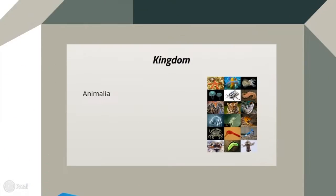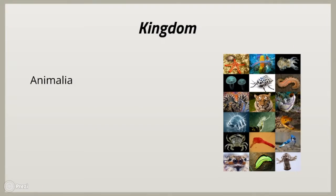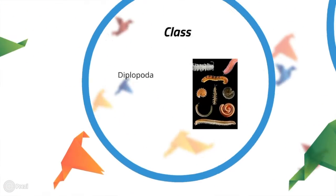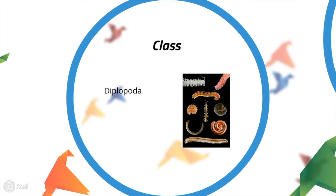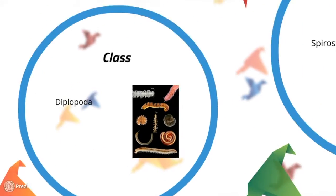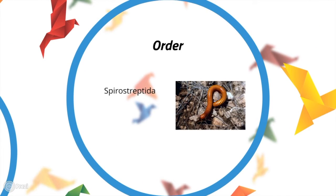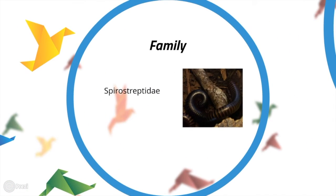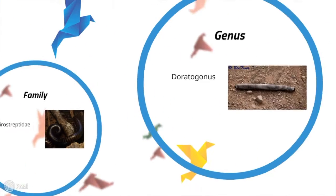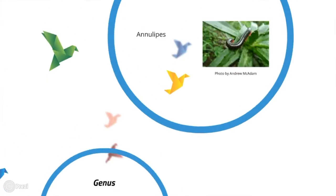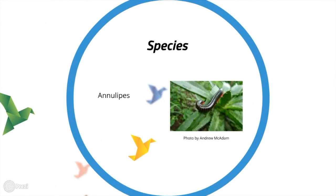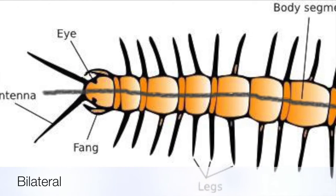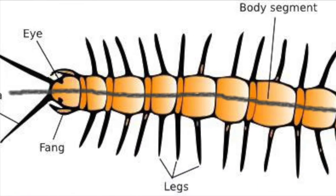My animal's classification: it is part of the kingdom Animalia, phylum Arthropoda, class Diplopoda, family Spirostreptidae, genus Dynoconus, species anulipus. My animal and all the animals in this phylum are bilaterally symmetrical.